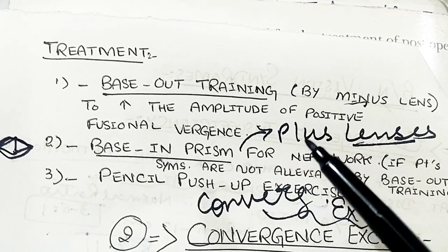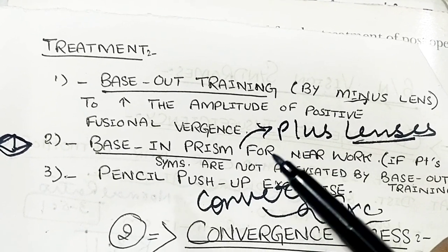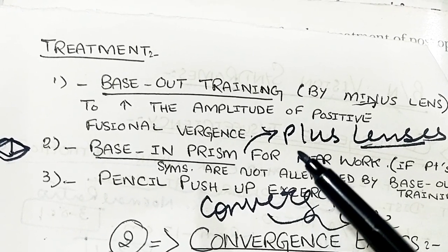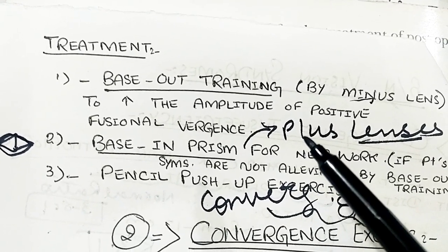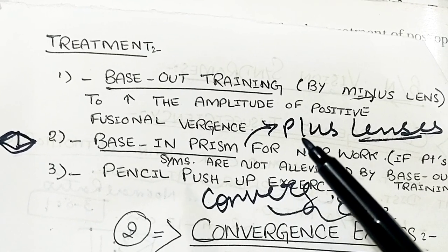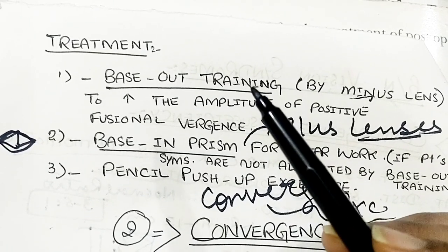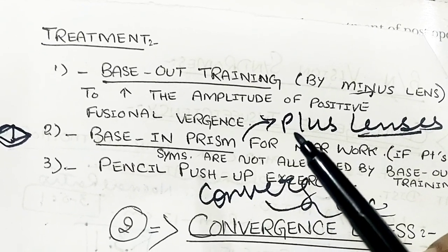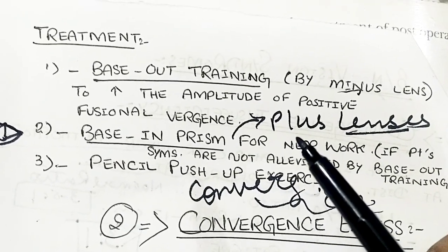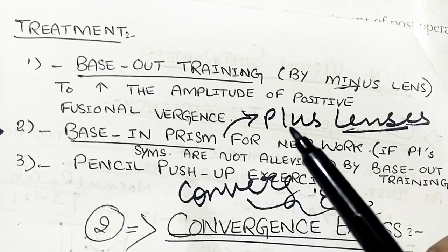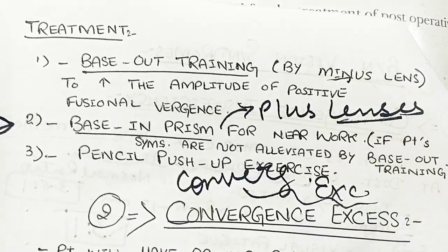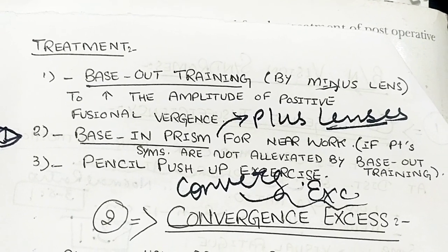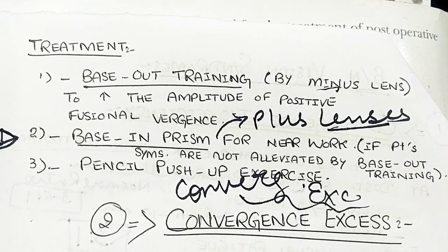Plus lenses relax accommodation and relieve convergence insufficiency symptoms, but this is just a relieving method, not a treating method. To actually treat convergence insufficiency, we should do base-out training and pencil push-up exercises. Plus lenses are the last choice, used only when urgent treatment is needed. Thank you so much for watching, and for more such videos, subscribe to my YouTube channel, Optometry World.